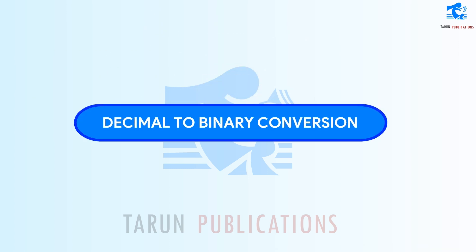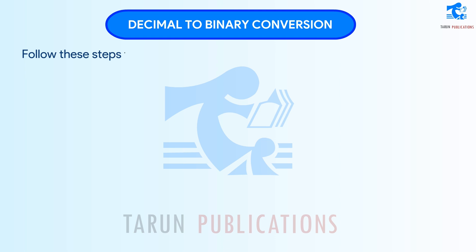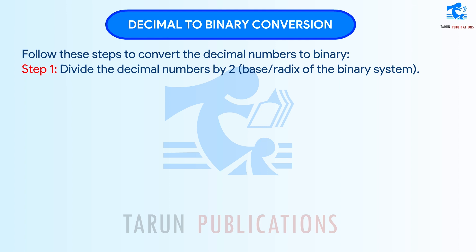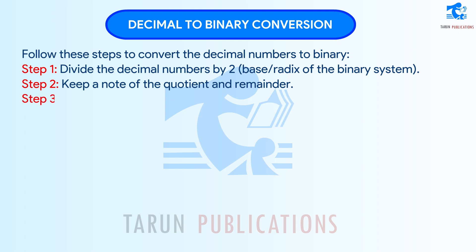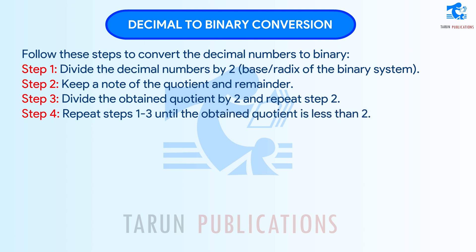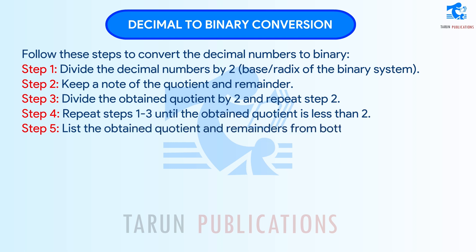Decimal to binary conversion. Follow these steps to convert decimal numbers to binary. Step 1: Divide the decimal number by 2, the base or radix of the binary system. Step 2: Keep a note of the quotient and remainder. Step 3: Divide the obtained quotient by 2 and repeat Step 2. Step 4: Repeat steps 1 to 3 until the obtained quotient is less than 2. Step 5: List the obtained quotient and remainders from bottom to top.